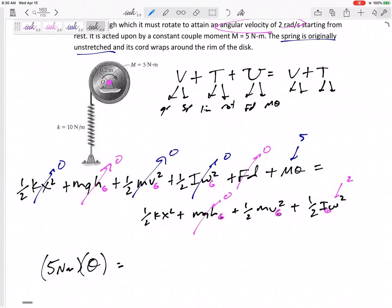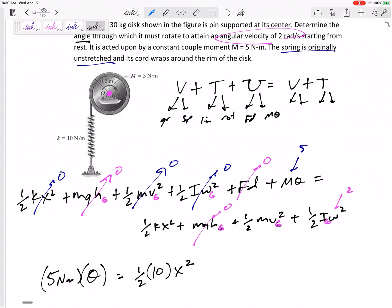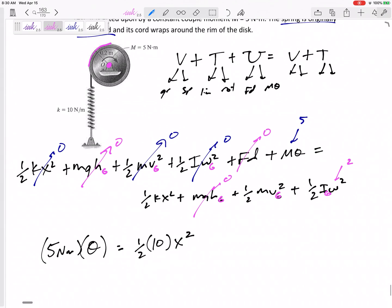Okay. On the right-hand side, I've got one-half kx squared. What is the stretch of that spring? I don't know. It is getting stretched, isn't it? I don't know that. Hey, velocity of point G. Point G is not moving left, right, up, down. So, point G is zero.